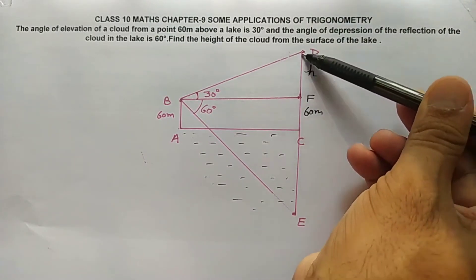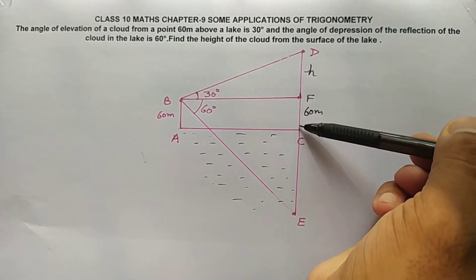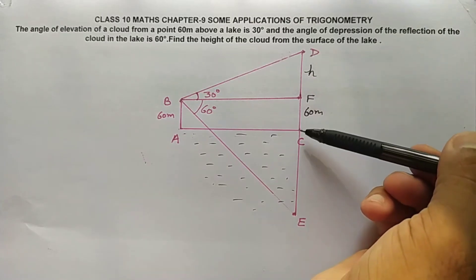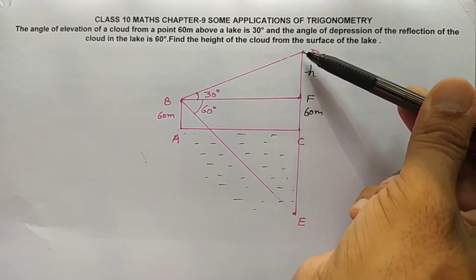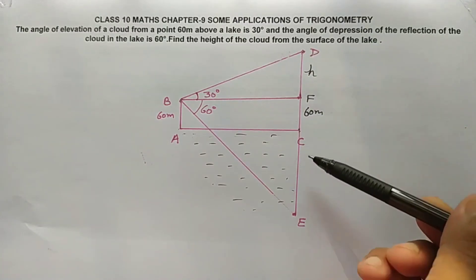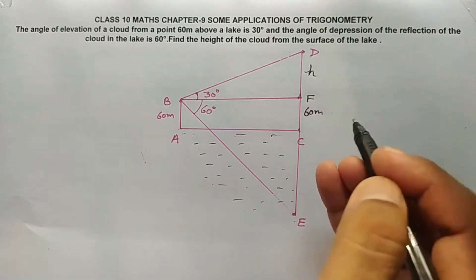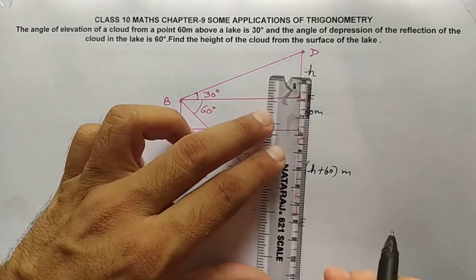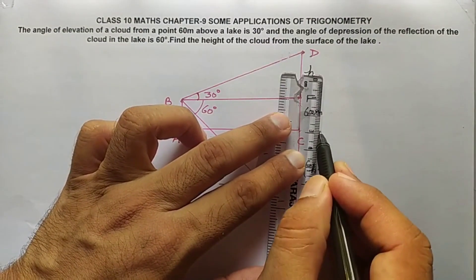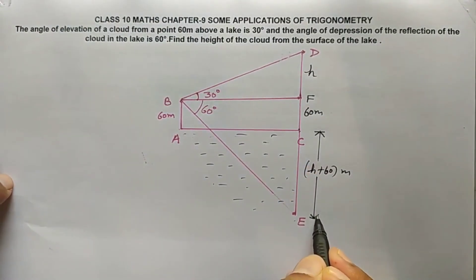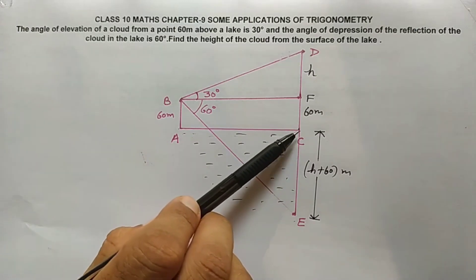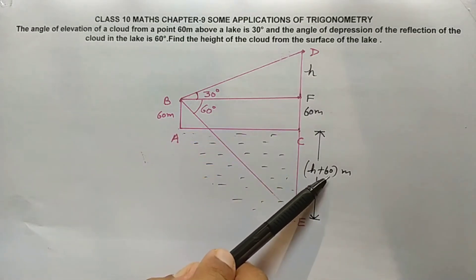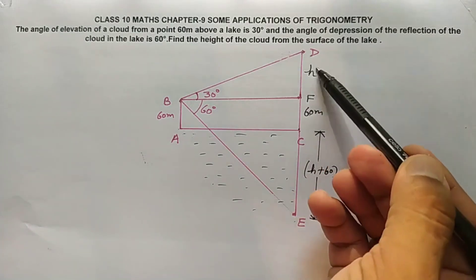CD is the height of the cloud from the surface of the lake. Since CD equals CF plus FD, that is 60 plus h. Now the key point: whatever height the cloud is above the lake, that same depth applies below — so CE also equals h plus 60. Therefore CD equals CE equals h plus 60.